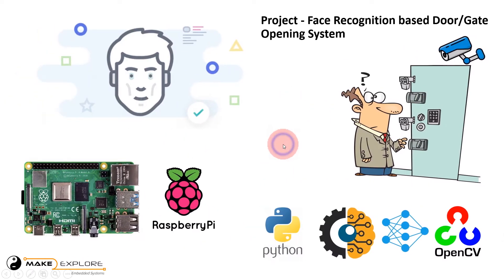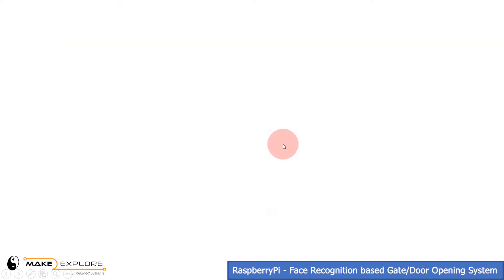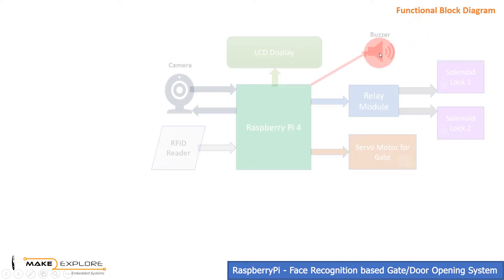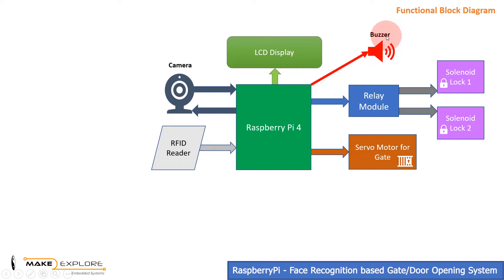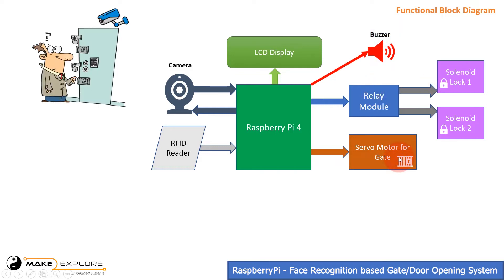Wondering about how it will work? Let's see the detailed functional block diagram of this project. Here is the block diagram. Raspberry Pi 4 is interfaced with a camera, RFID reader, LCD display, buzzer, 2-channel relay board, gate locks, and a servo motor to open and close the gate.